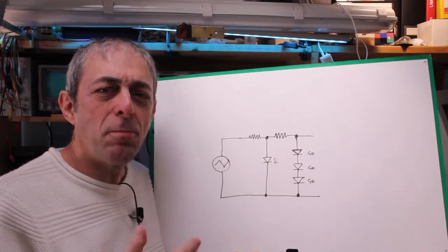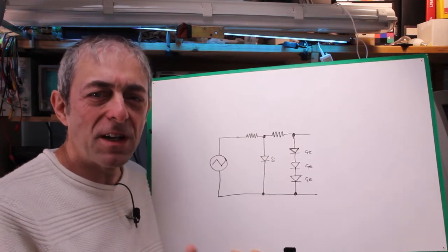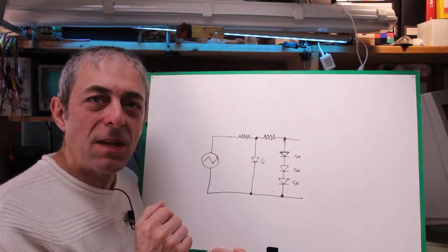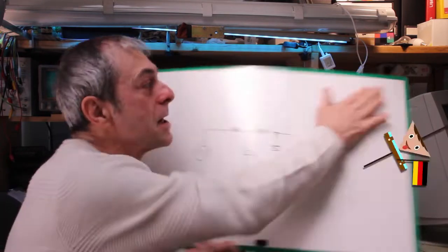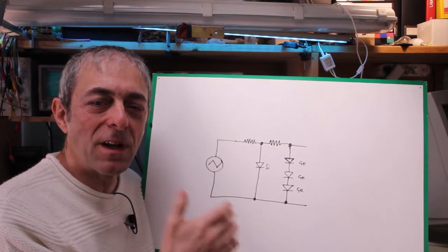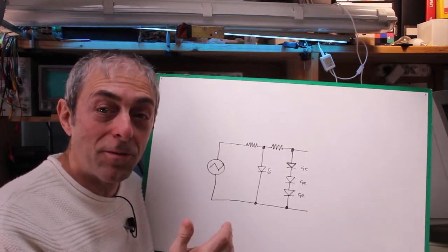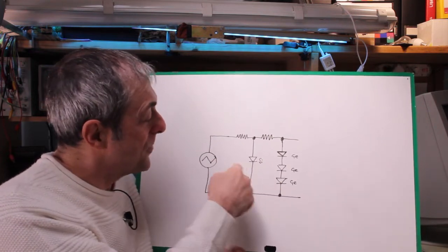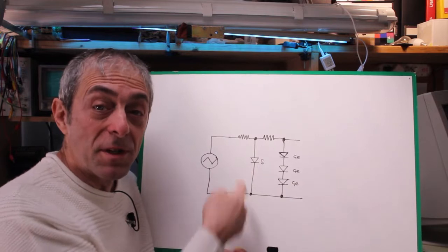So to avoid this problem, Hewlett-Packard used a further string of diodes, this time germanium diodes. Because the germanium diodes have a smoother curve and start conducting at a lower voltage than silicon diodes, they soften up the waveform after the silicon diode has clipped it.